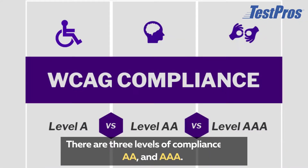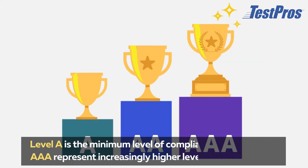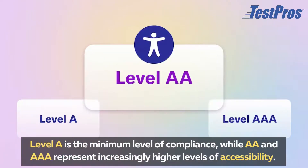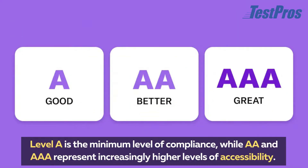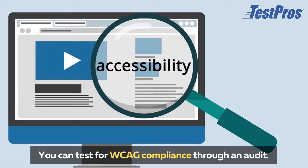There are levels of compliance — A, AA, and AAA. Level A is the minimum level of compliance, while AA and AAA represent increasingly higher levels of accessibility. You can test WCAG compliance through an audit.